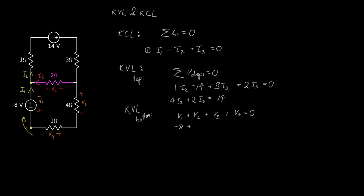V2 is, let's see, I3, we need to write this in terms of I3. So I3 is flowing from right to left, so V2, it's a little bit confusing here, V2 is actually minus two times I3.